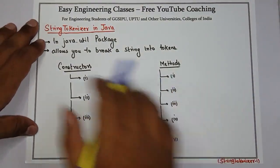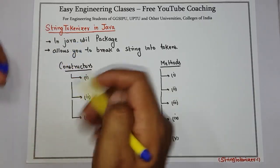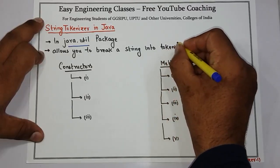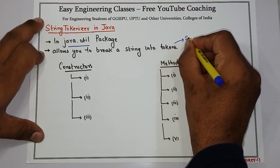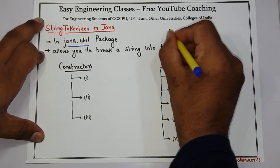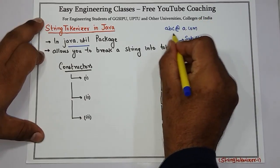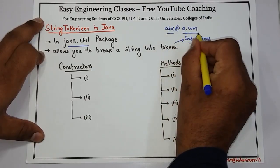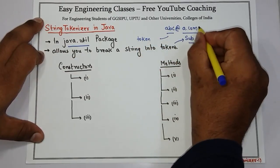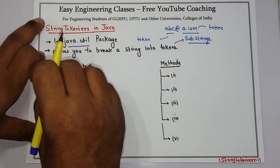Today we will see about StringTokenizer class in Java. StringTokenizer is in the java.util package and is used to break a string into tokens. Tokens are substrings — depending on some particular pattern we can break strings into tokens. For example, if we pass an email id like abc@a.com, we can separate the part before the '@' and the part after it, making 'abc' one token and 'a.com' another token using StringTokenizer.